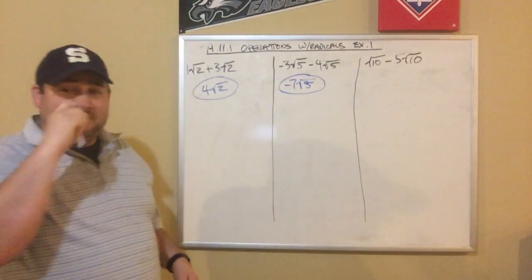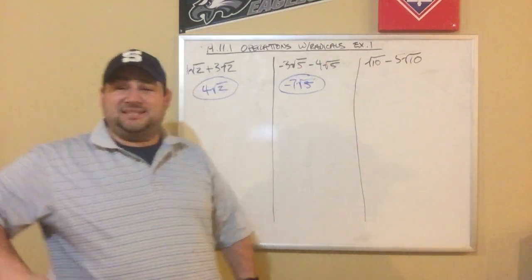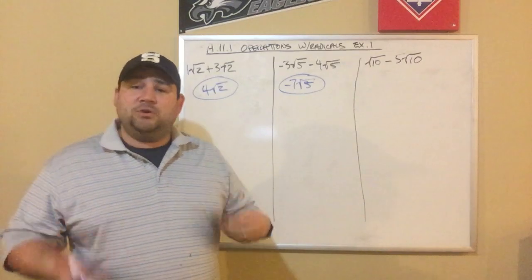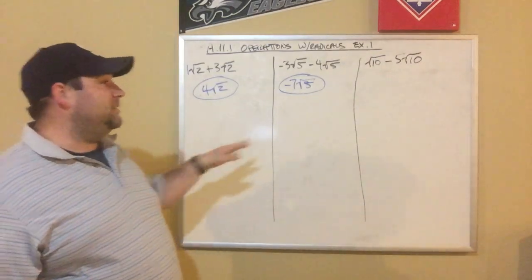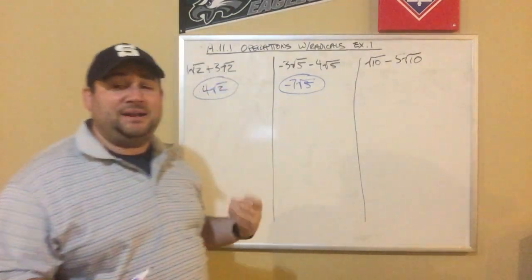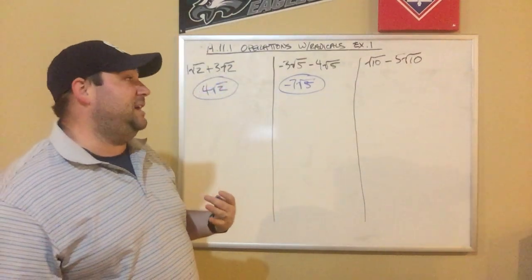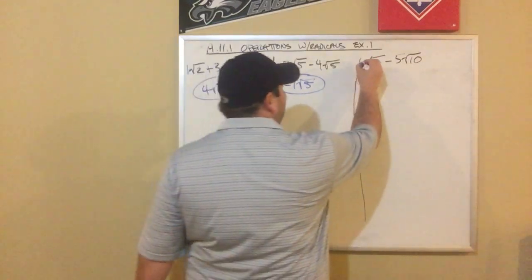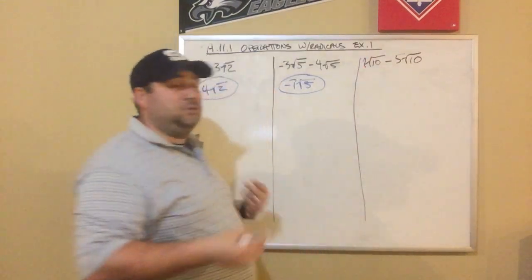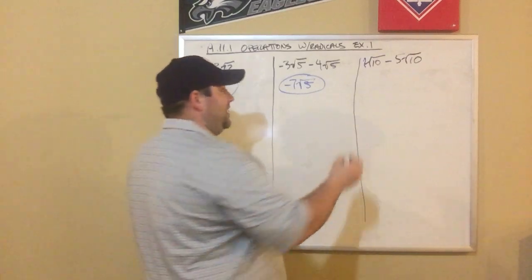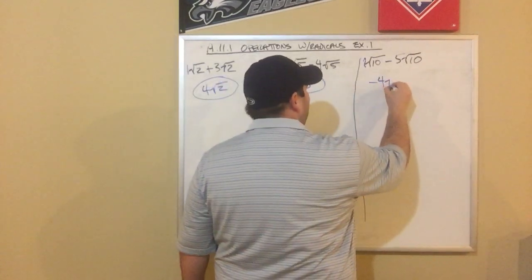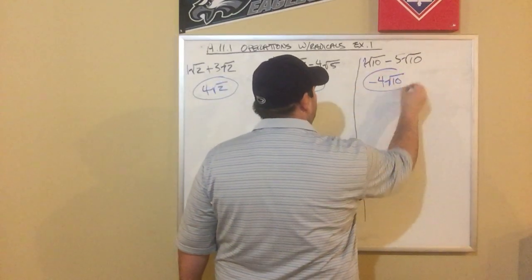When the number under the square root is the same, they're like roots, which means you can add or subtract them. So if I look at my last one: root 10 minus 5 root 10. If there's no number, I can assume that's a 1. So 1 root 10 minus 5 root 10 — 1 minus 5 is negative 4, so it's negative 4 root 10.